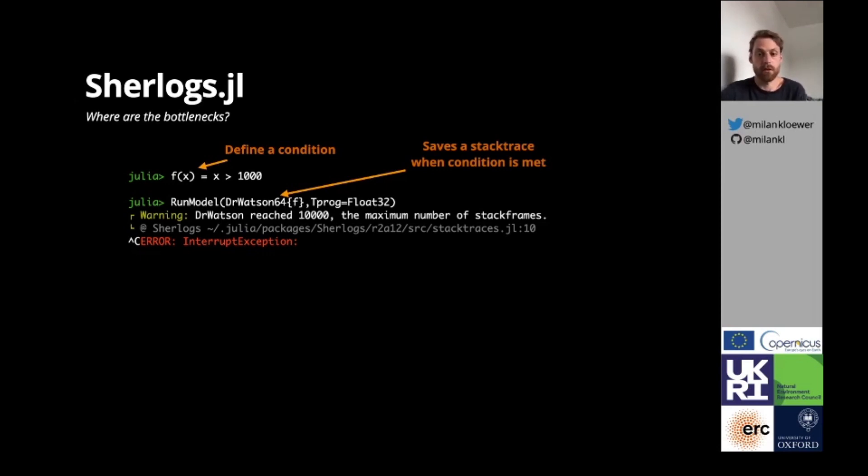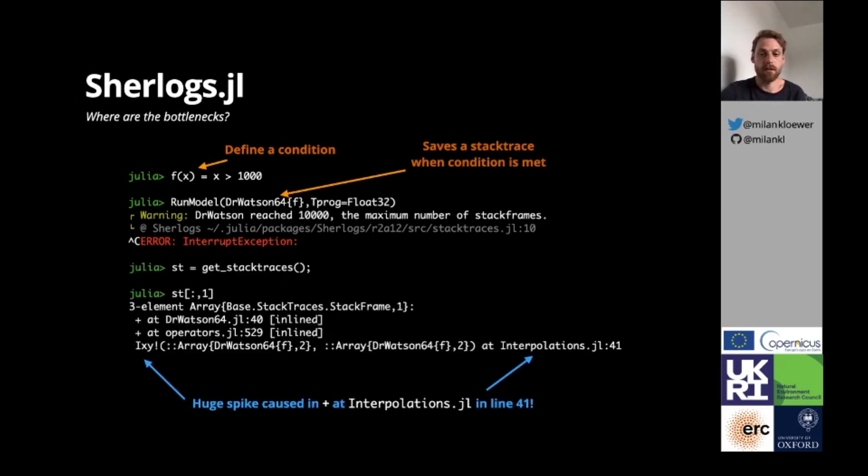Checking the first stack trace then tells us that the big spikes on the previous slide were caused by an addition in an interpolation function and even the line in which it happened.